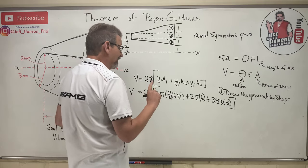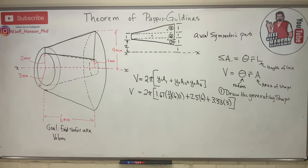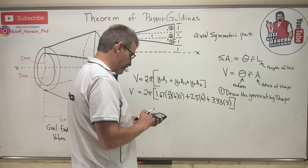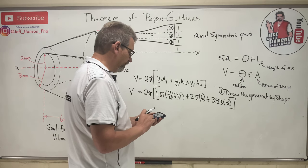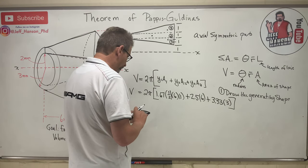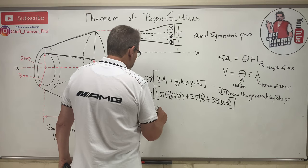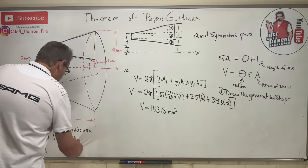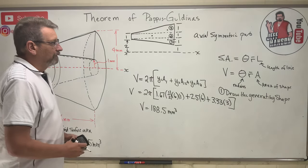Now computing: 1.67 × 3 + 2.5 × 6 + 3.33 × 3 = 30. Then V = 2π × 30 = 188.5. So the volume is equal to 188.5 cubic millimeters.